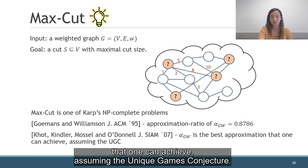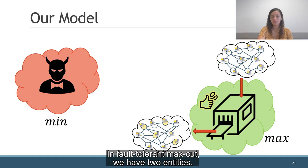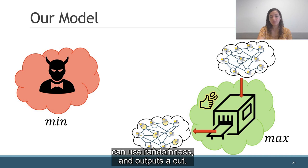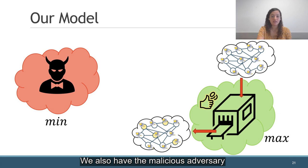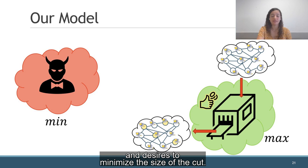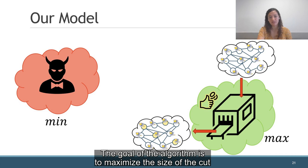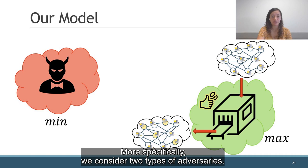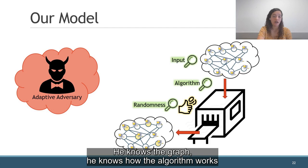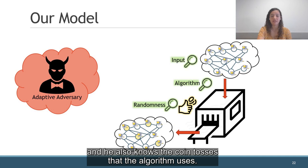In fault-tolerant MaxCut, we have two entities. We have the algorithm that receives the graph as an input, can use randomness, and outputs a cut. We also have the malicious adversary that chooses a bounded number of vertices to fail, and desires to minimize the size of the cut. The goal of the algorithm is to maximize the size of the cut after the adversary acts. More specifically, we consider two types of adversaries. The adaptive adversary, who knows everything: the graph, how the algorithm works, and also the coin tosses that the algorithm uses. Altogether, the adversary knows the cut, and given the cut, he has to decide which vertices to remove.